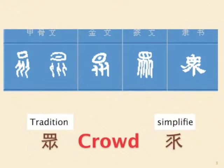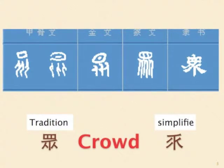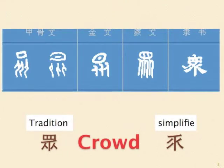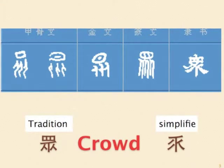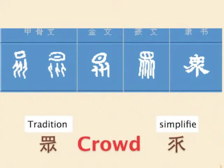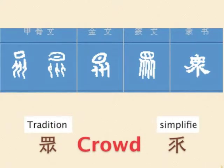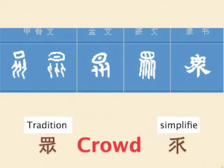Next word: crowd. The original meaning is three slaves working under the sun. The word for sun gradually evolved to become a circle with a stroke inside, but someone mistakenly added one more stroke into the sun, which became the traditional form. The simplified form only keeps the three slaves.